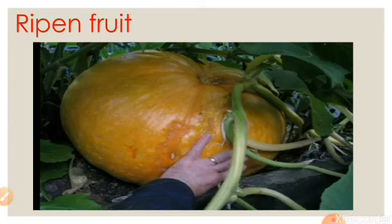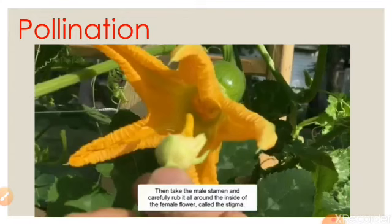From this experiment we can clearly understand how flowers change into fruit. In this experiment, we transferred the pollen grains from the male flower to the female flower — this is called artificial pollination. The process by which pollen grains reach the stigma is called pollination. The flower that receives pollen grains is called a pollinated flower, while the one that did not receive pollen grains is called an unpollinated flower.